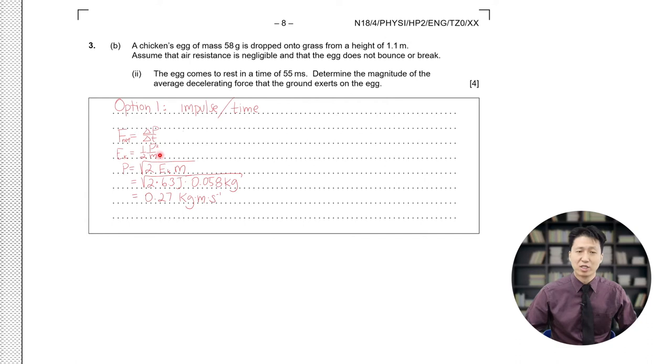Of course, this equation comes from that kinetic energy is equal to one-half mv squared and momentum is mv. We will input this momentum here. Dividing 0.27 kilograms meters per second by 0.055 seconds gives us 4.9 newtons. But this is not the answer. This is the net force on the egg.